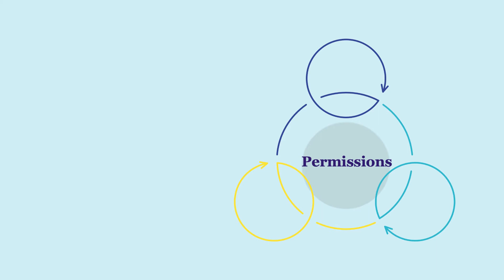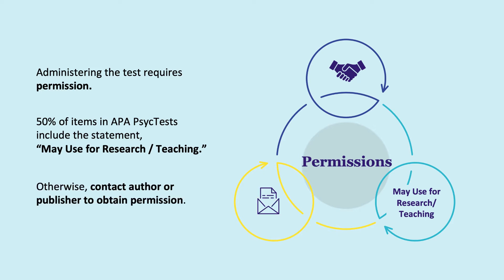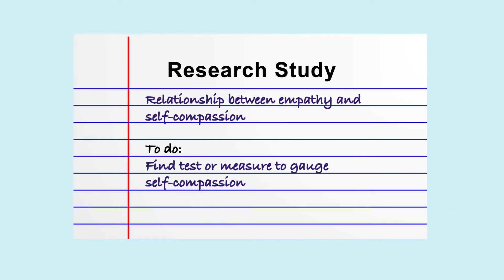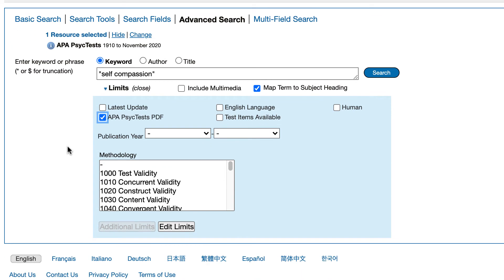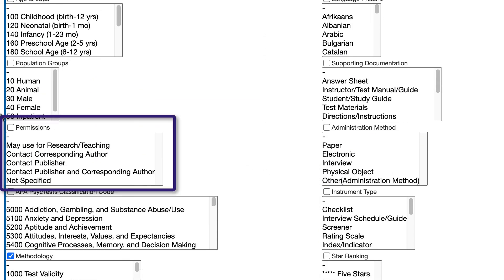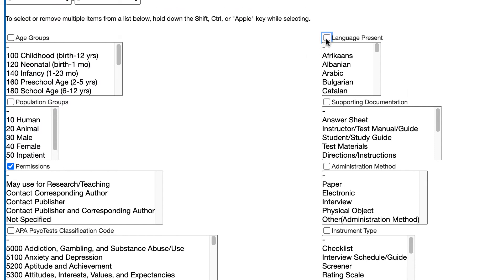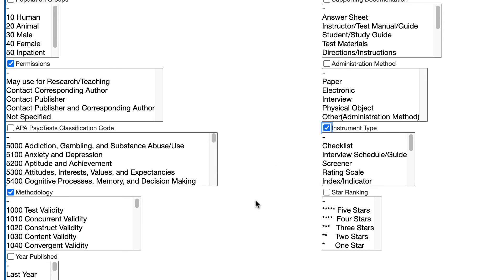you'll need to make sure that you have permission to do so. About half of the items in APA PsychTest include the permission statement "may use for research/teaching." In other cases, you may have to contact the author or publisher to obtain permission directly from them. In our scenario, we know that we want to use the measure that we find for research, so let's narrow our search to only find results labeled with this kind of permission. To do so, you'll need to activate the permissions limit. Select the edit limits button at the bottom of the limits box and then check the permissions option. While you're on this page, you might want to scroll through the other limit options to see if there are additional ones you'd like to turn on, such as language or instrument type. When you're done, select the customize limits button.